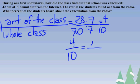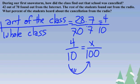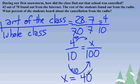4 tenths equals x over 100. What you do to one, you do to the other. I multiply by 10. 10 times 10 is 100, and 10 times 4 is 40. The percent of kids that heard about the cancellation on the radio was 40%.